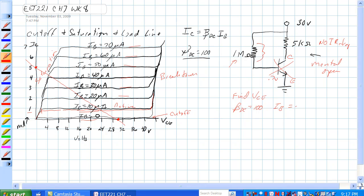So IB is equal to 30 volts minus 0.7 volts divided by 1 meg ohm, and that is equal to 29.3 volts.